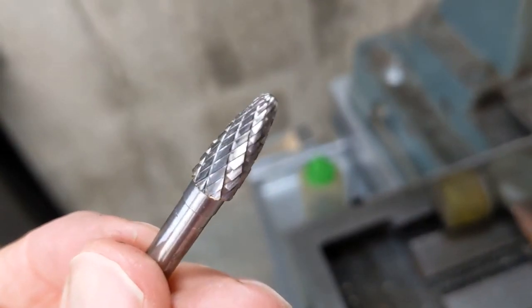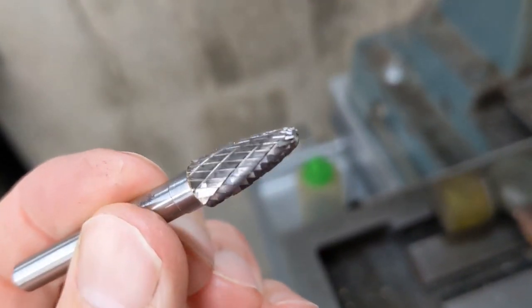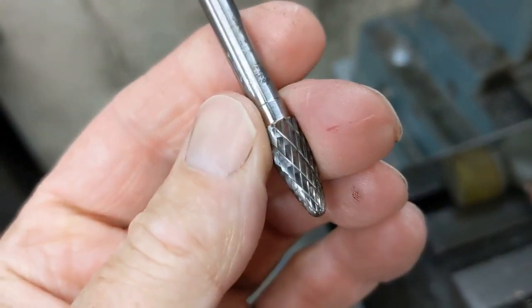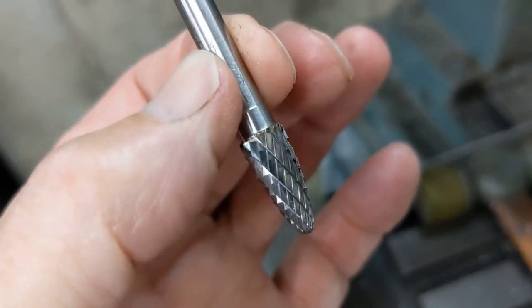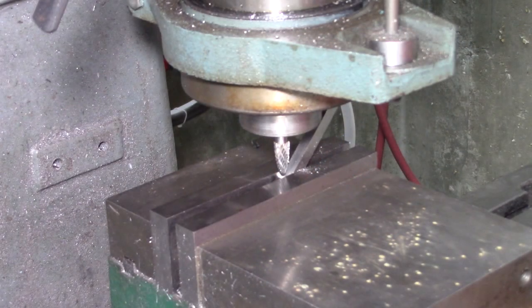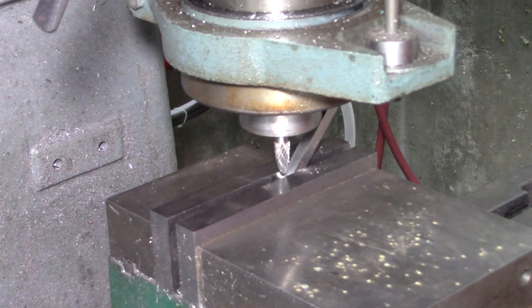Okay, this is the burr we're going to use to create that recess in our part. I don't know what that profile is called. It's a quarter inch shank. I'm just going to put it in my mill and use it to cut the recess in the tool. Not much of it in my chuck, but it works.